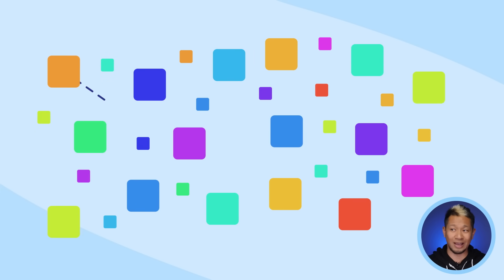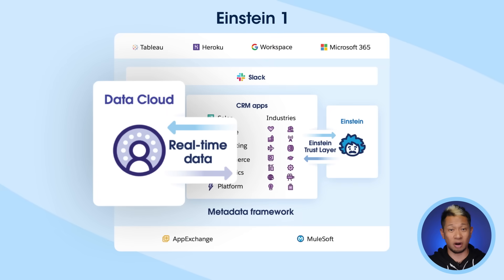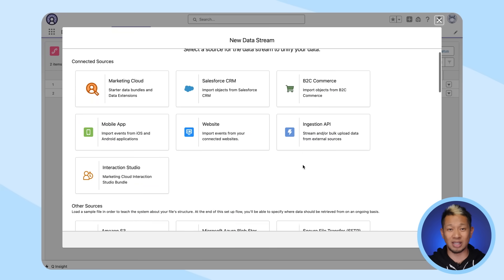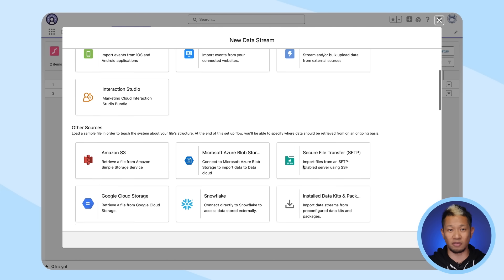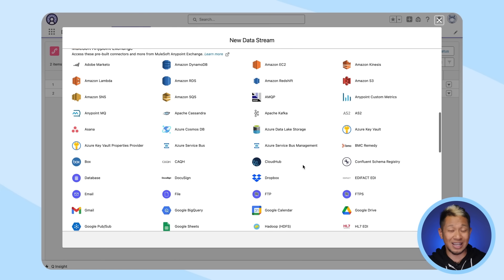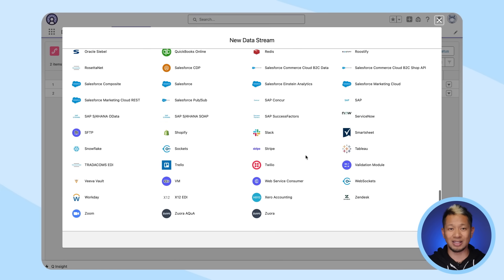But what about all those thousands of other apps that companies use? Most of them — like 70% — are completely disconnected. That's where Data Cloud, part of Einstein One, comes in. Data Cloud lets you easily connect your data in Salesforce with data from any other external source, and because Einstein One contains a whole library of connectors, you can integrate other apps and data into Salesforce, no matter where it's stored or what format it's in.